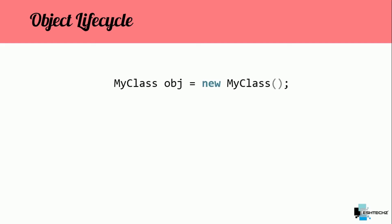First let's take a look at object creation. In Java, whenever we want to create an object we usually use this syntax: class name, object name, equals new, and then the class name again. The 'new' keyword is what we generally use to create an object. There are several other ways as well, but for now we are sticking with the new keyword. Once we execute this we get the object, and this particular process is object creation.